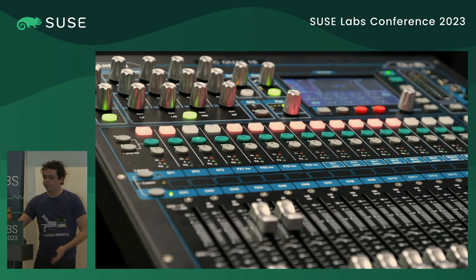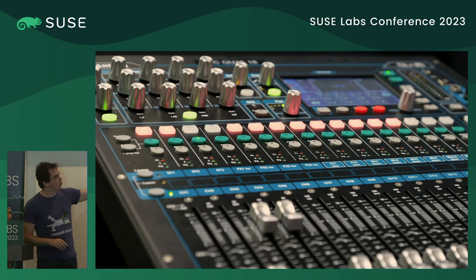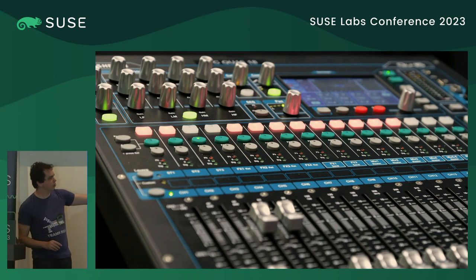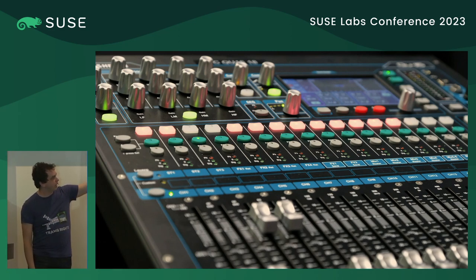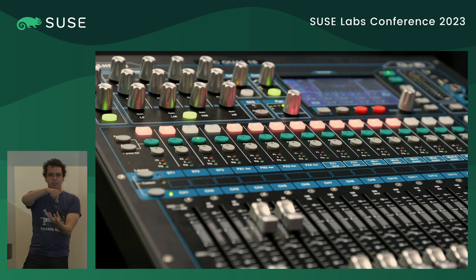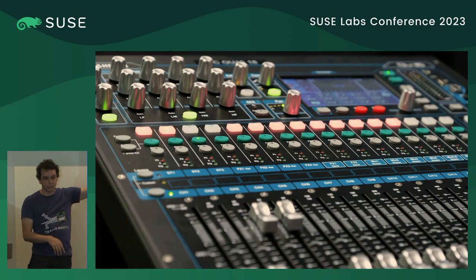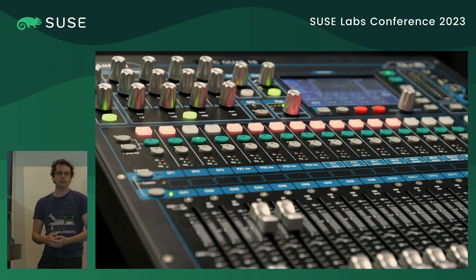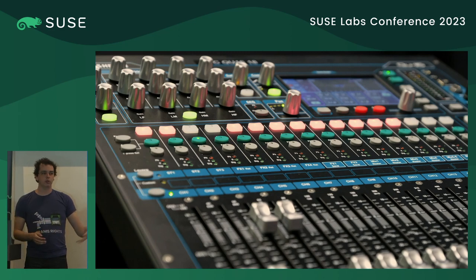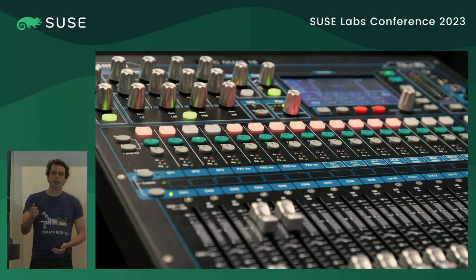Affordance is our second attribute: visual or other attributes of a control that indicate how it works. Looking at this audio panel, you can immediately see how the controls work. The sliders have a depression for the finger and a groove showing how they move. The buttons are raised so you know to push them. The knobs have texture so you grab and rotate them. You wouldn't think to push those knobs or turn the buttons. Affordance tells us how to interact — and this is where doors often fail us.